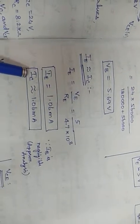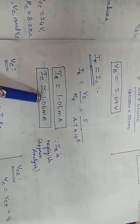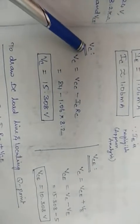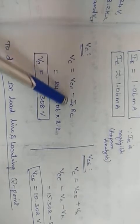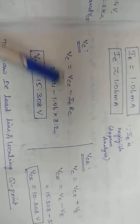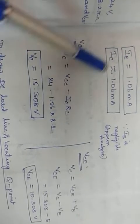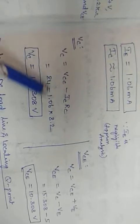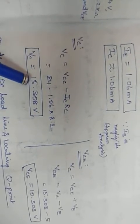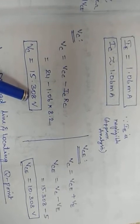IC is the same as IE in approximate analysis, so IC = 1.06 milliamps. Next, VC = VCC − IC × RC. VCC is given, IC was just calculated, and RC is given. Simplifying, VC = 15.308V.